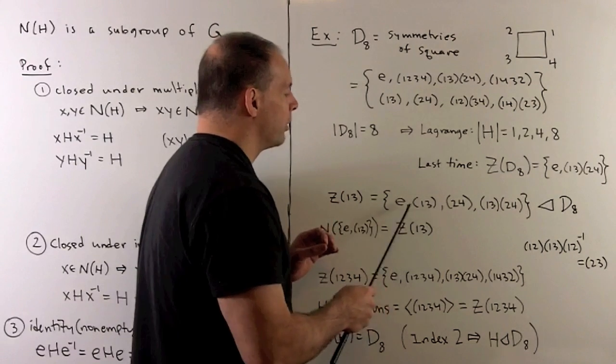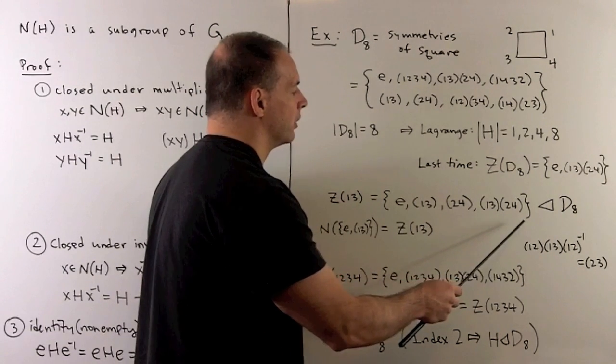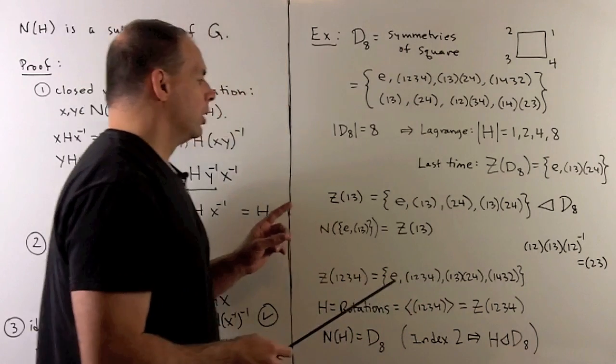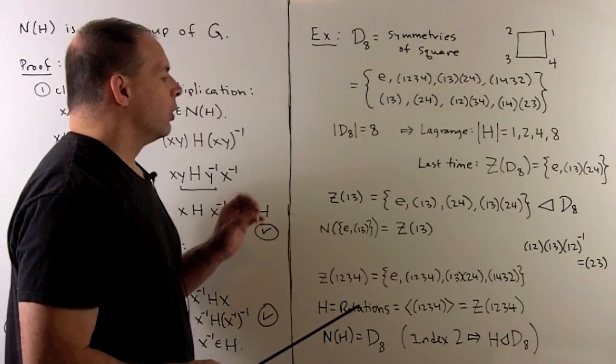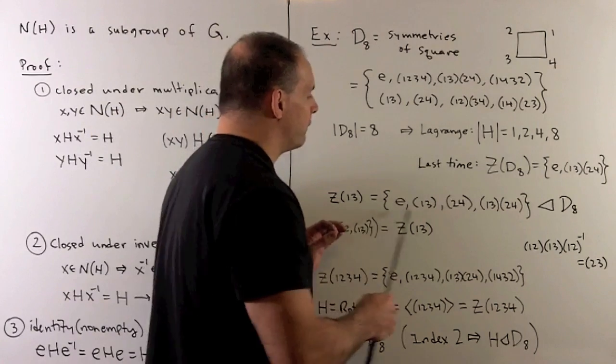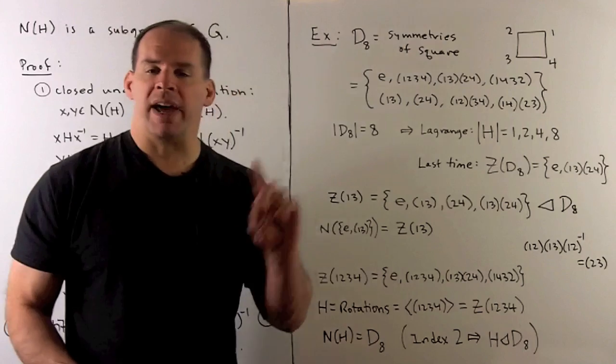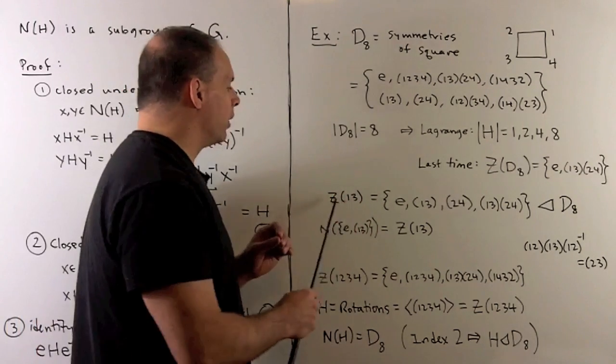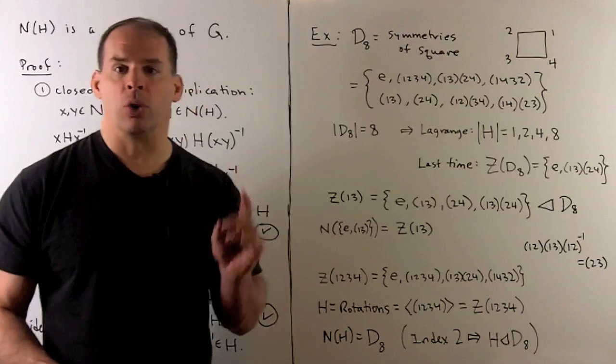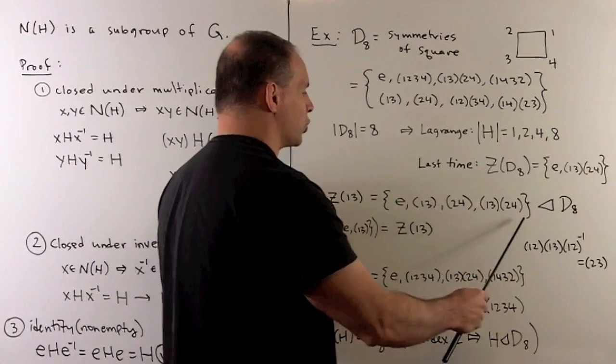Could we have any other elements in here? Well, if we did, we have four elements. The next number for subgroup orders is eight. If I had any more elements, we would have the entire group, and that would mean (1,3) is in the center of our group. But we know that doesn't happen. So this is the centralizer.